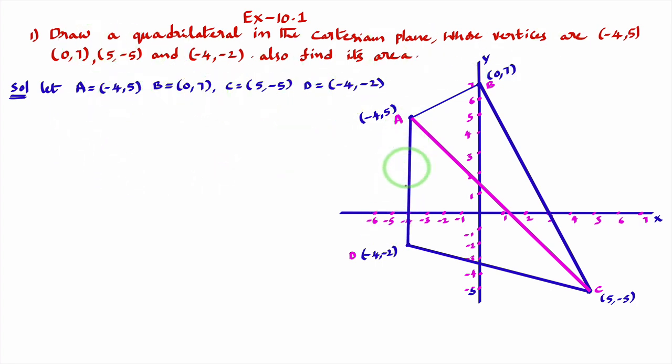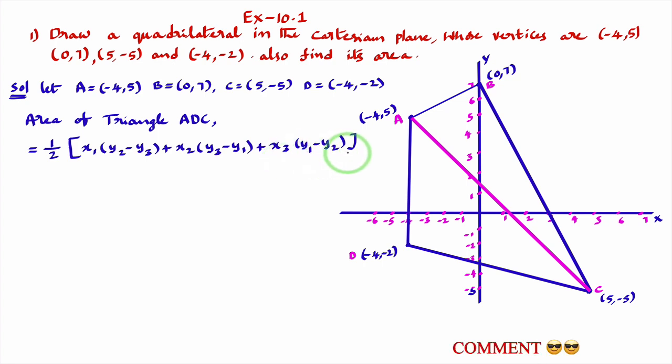Now, first I'll calculate area of triangle ADC. To calculate area of triangle when we know three vertices, this is the formula. Half into x1 into y2 minus y3 plus x2 into y3 minus y1 plus x3 into y1 minus y2.